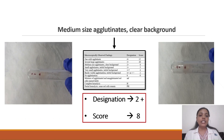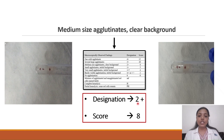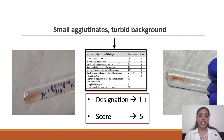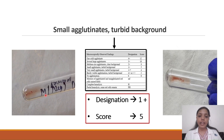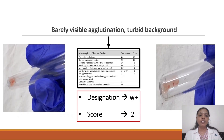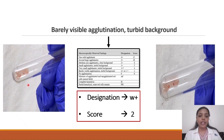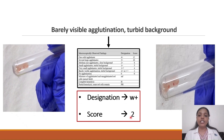Medium-sized agglutinates with a clear background are designated as 2+ with a score of 8. When there are small agglutinates but a turbid background, the designation is 1+ with a score of 5. Barely visible agglutination with a turbid background is designated as weak with a score of 2.